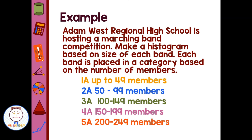This really sets up our bin system for a histogram, because just based on the number of members, you're going to be in a certain category. We have 0 to 49, 50 to 99, 100 to 149. So that puts each of these bands into one of these categories, which is ideal for a histogram.